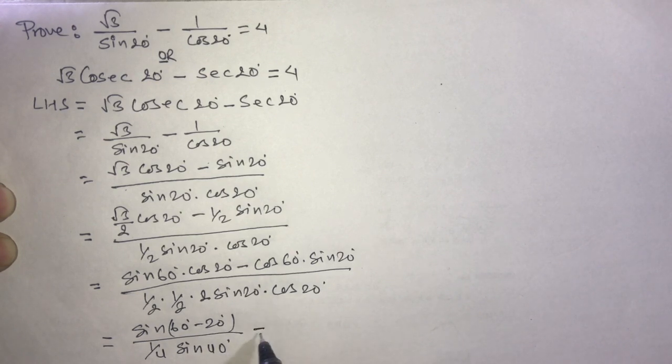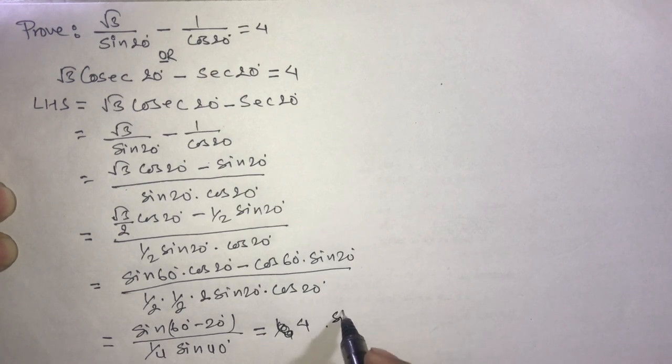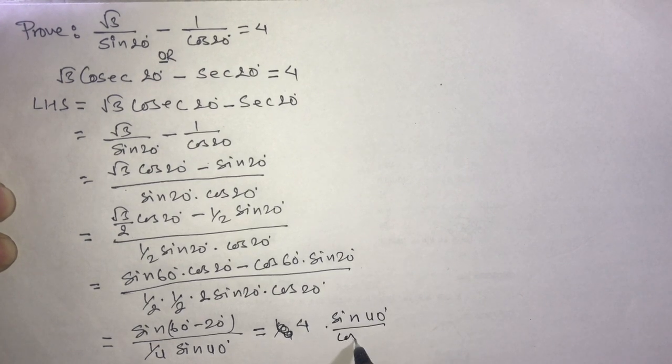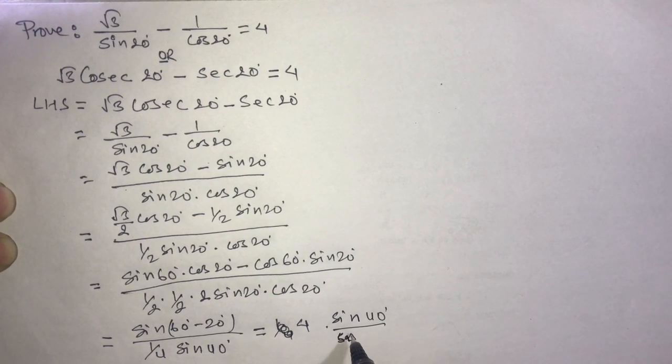This equals sine 40 by 1 by 4 sine 40. Taking the reciprocal, it becomes 4 into sine 40 degree divided by sine 40 degree.